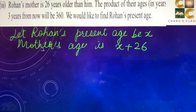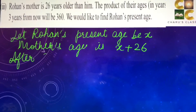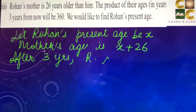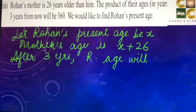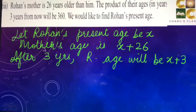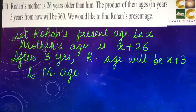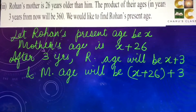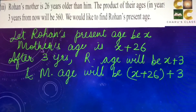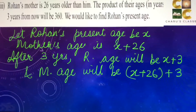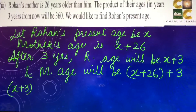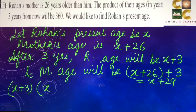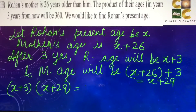After three years, their ages will each increase by 3. So Rohan's age after three years will be x + 3, and mother's age will be the present age (x + 26) plus 3, which is x + 29. According to the question, the product of their ages after three years will be 360, so (x + 3)(x + 29) = 360.